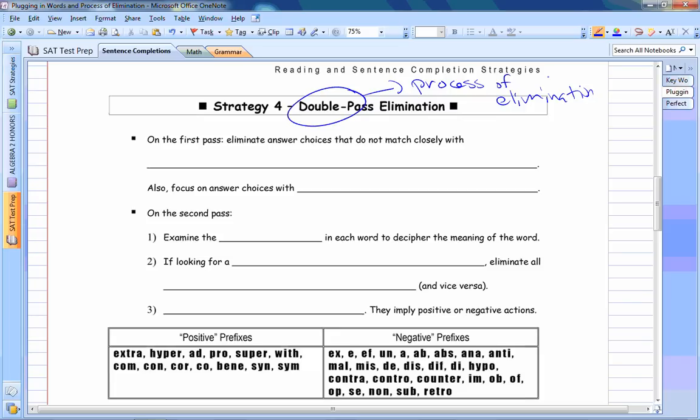So on the first pass, obviously you want to eliminate choices that do not match closely with the words you filled in the blanks. Also, you want to focus on choices with words you know. Because any words you don't know, you've got to hold on to it.